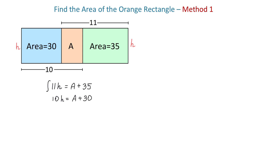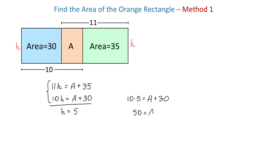Using these two equations we form a system and solve it. If we subtract the equations, on the left side 11H − 10H = H, and on the right side A − A = 0 and 35 − 30 = 5, so H = 5. Replacing H in the second equation: 10 × 5 = A + 30, so 50 = A + 30, and subtracting 30 from both sides gives A = 20 square units — the area of the orange rectangle.